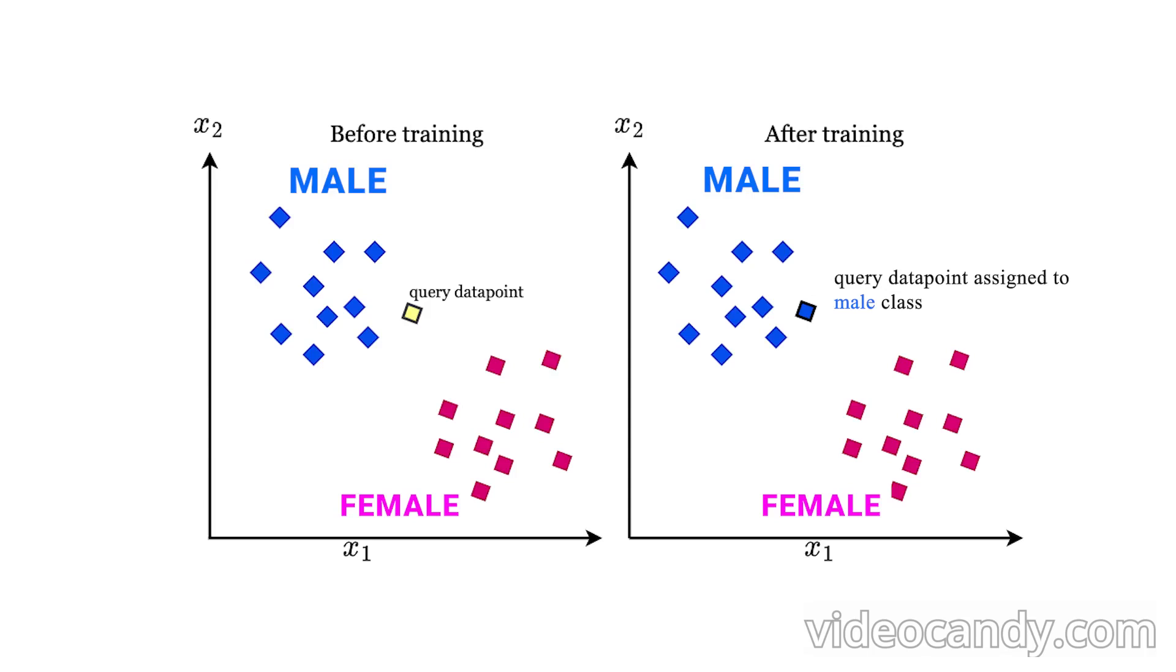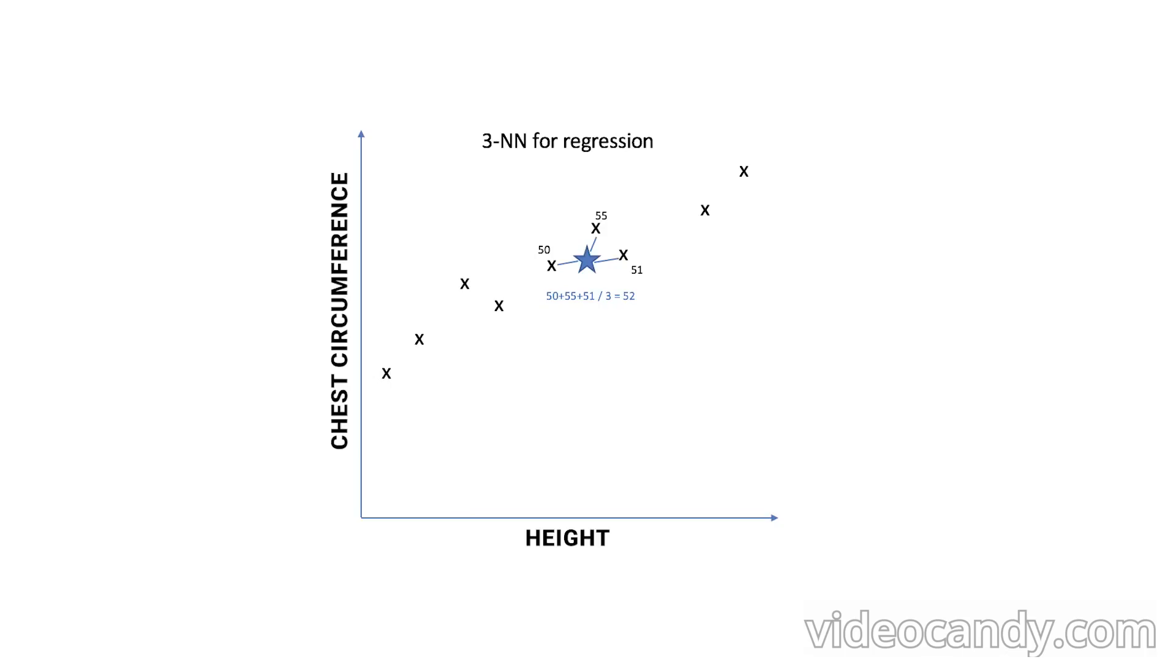In a classification example, we might say that the gender of a person will be the same as the majority of the five people closest in weight and height to the person in question. In a regression example, we might say that the weight of a person is the average weight of the three people closest in height and of chest circumference. This makes a ton of intuitive sense.